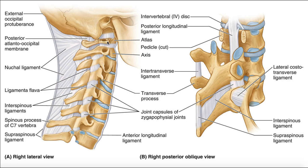This bone right here is the first of the cervical vertebrae — this is the atlas, or C1. C1 and C2 are the only ones that actually have a specific name. The atlas is called the atlas because it balances this large spherical structure — the skull — on top of it. According to Greek mythology, Atlas was a guy who held the earth on his shoulders. So just like Atlas held the earth on his shoulders, the C1 vertebra holds the skull on its shoulders, so to speak.